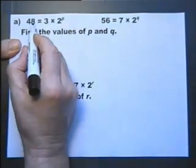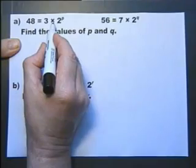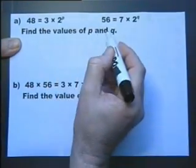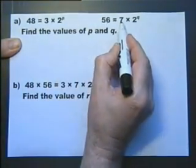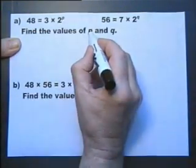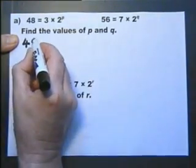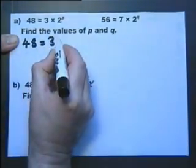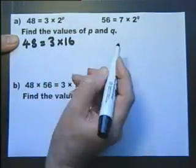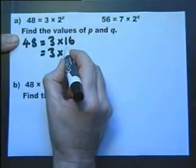We're given the information that 48 equals 3 multiplied by 2 to the power of p. And 56 equals 7 multiplied by 2 to the power of q. And we've got to find the values of p and q. Well, 48 is definitely 3 times 16. And 16,